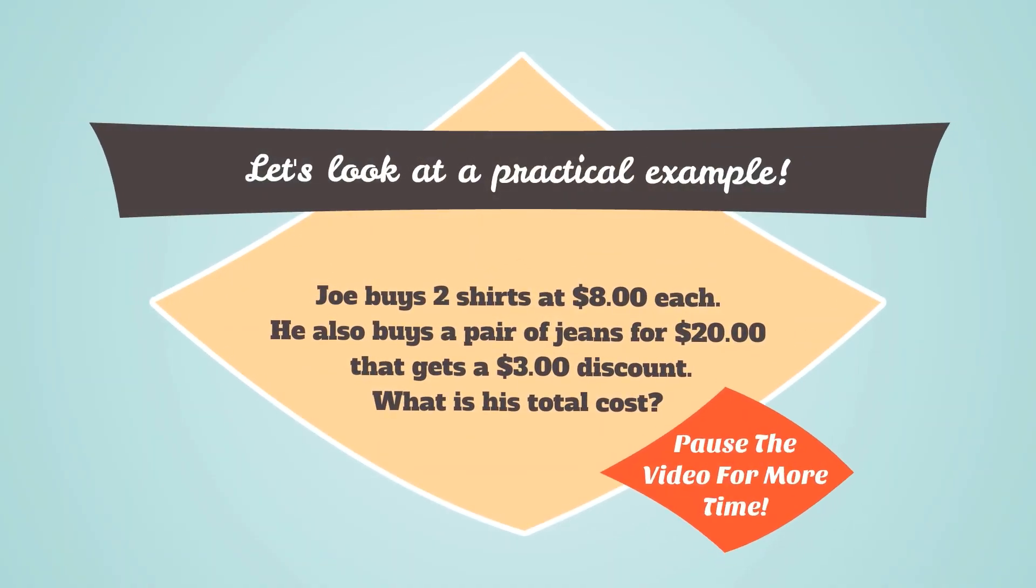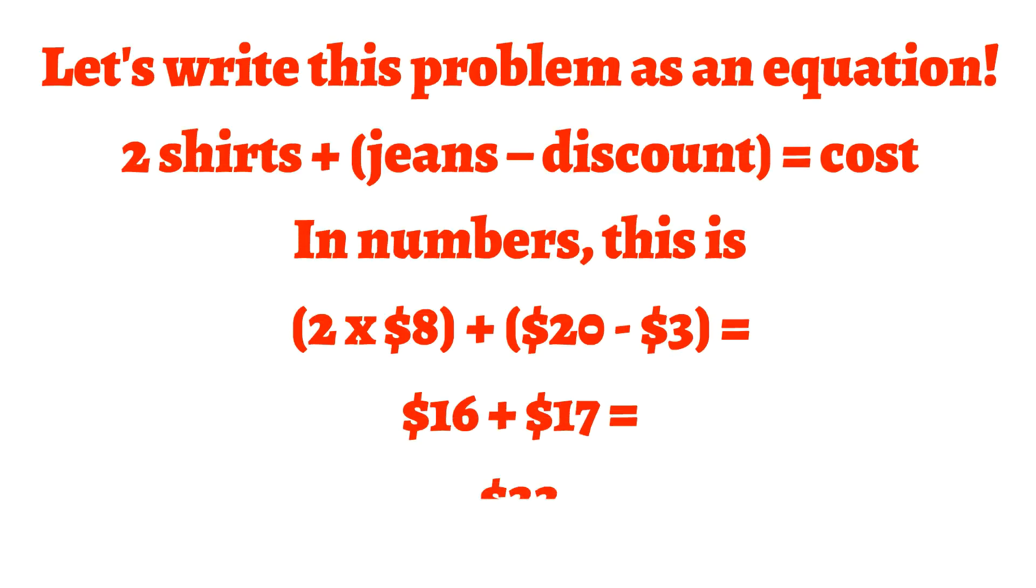Let's look at a practical example. Joe buys 2 shirts at $8 each. He also buys a pair of jeans for $20 that gets a $3 discount. What is the total cost? Pause the video for more time. Let's write this problem as an equation. We get 2 times 8 plus parentheses 20 minus 3, which gives us our total cost.